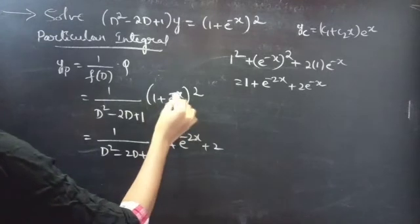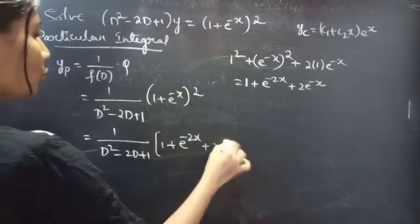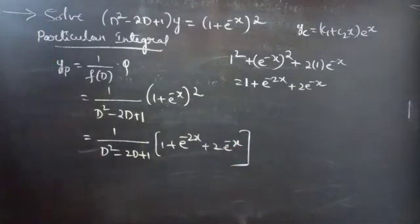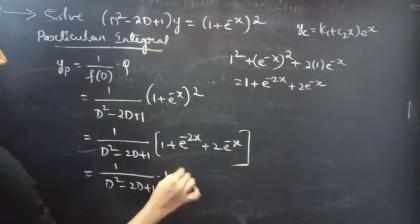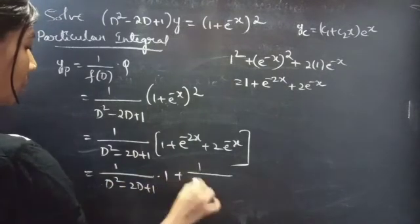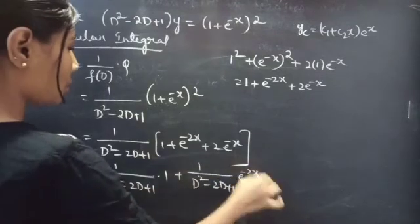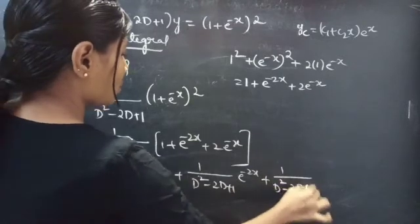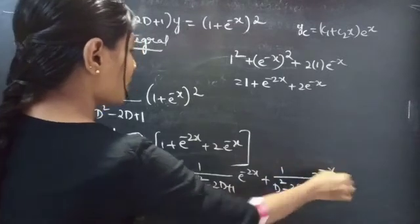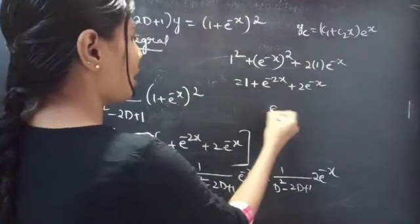The expansion of (1 + e^(-x))² is 1 + e^(-2x) + 2e^(-x). So yp = 1/(D² - 2D + 1)·1 + 1/(D² - 2D + 1)·e^(-2x) + 1/(D² - 2D + 1)·2e^(-x). All Q terms are in the form e^(ax) where a is a real number.